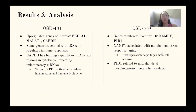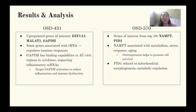Moving on to the results, I discovered in the first data set that some of the upregulated genes, such as EEF1A1 and MALAT1, were associated with tRNA. This was an interesting finding because tRNA primarily works in protein synthesis, but from further exploration I found that it also helps to regulate immune response. Another interesting find was GAPDH, where its activation impacts immune dysfunction as well as inflammation.